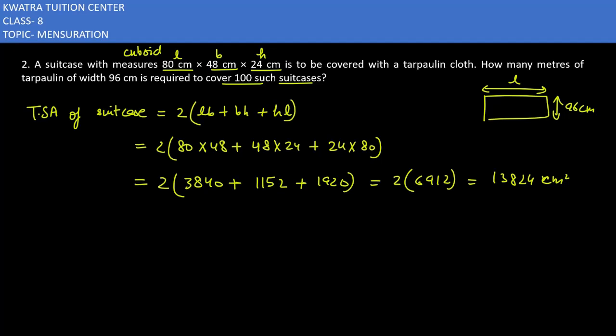Divide from which to width of the tarpaulin, because the TSA of suitcase will be equal to area of tarpaulin cloth. And which area of tarpaulin cloth will be length times breadth. 13,824 substitute left side and length is not given. Breadth is given which is 96.